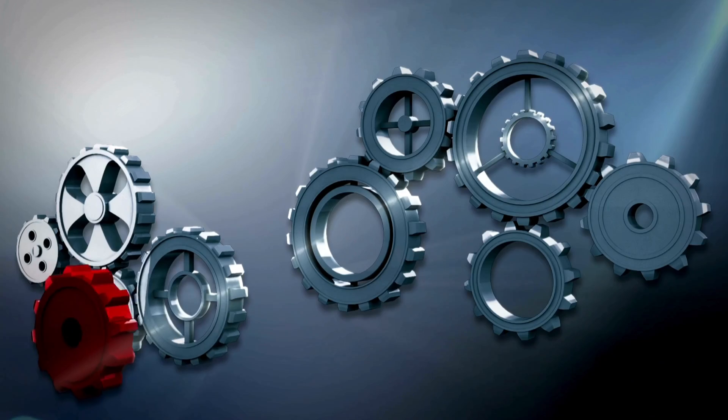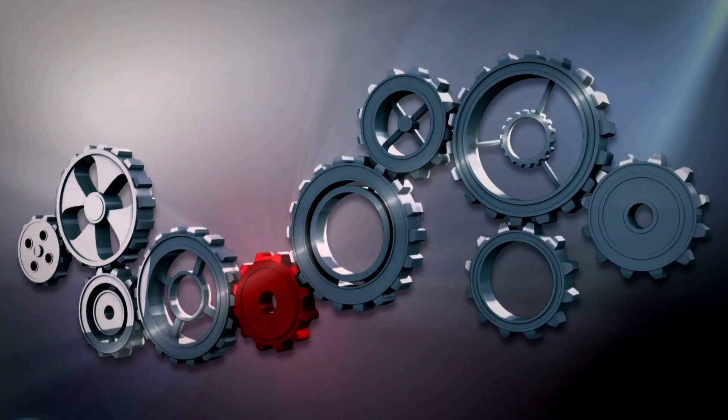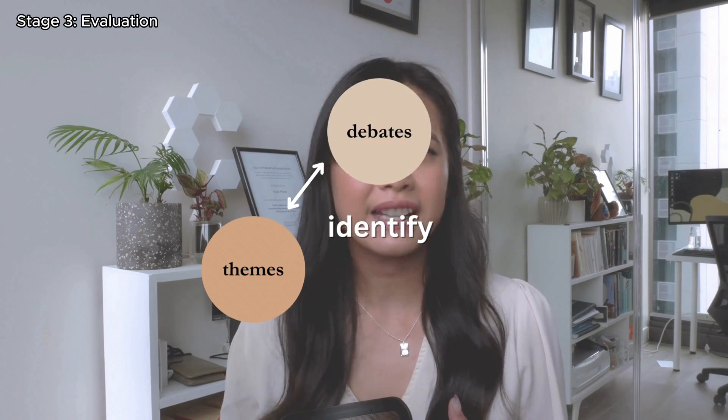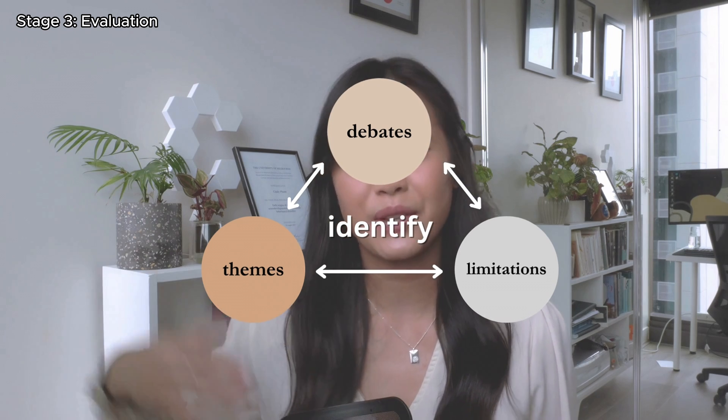For each subtopic I try to find three to five papers so that when I write up the literature review I have more than one reference to include as a citation, ensuring that what I'm saying is valid and verified by multiple references. After skimming the title and abstract, if it's highly relevant to my topic I would skim the full paper. While I'm reading, I identify common themes, debates, and limitations, and record these in the notes section on the right-hand side.